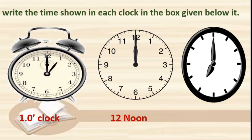Here numbers are not given, but in any watch or clock, only numbers from 1 to 12 are written and the position is fixed. In any watch, the position of 1, 2, 3, 4, 5, 6, 7, 8, 9, 10, 11, and 12 is fixed. And 12 and 6 are opposite to each other, and 3 and 9 are opposite to each other. So the time here is 7 o'clock. After O, we use an apostrophe sign and write clock.